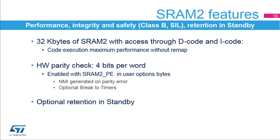The 32KB of SRAM2 is particularly suitable for performance, integrity, safety, and low power. The SRAM2 is accessed through the data and instruction buses without any remapping, enabling code execution at zero wait states. The SRAM2 supports parity check; the data bus width is 36 bits because 4 bits are available for parity check — 1 bit per byte — in order to increase memory robustness as required by Class B or SIL standards. Class B is for home appliances and SIL is for the safety integrity level. The parity bits are computed and stored when writing into the SRAM and automatically checked when reading. If one bit fails, an NMI is generated, and the same error can also be linked to the brake input of the timers. Note that the SRAM2 parity check is disabled by default.